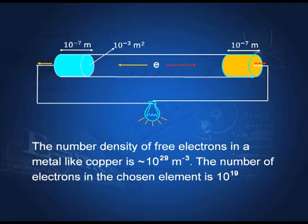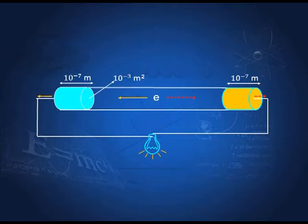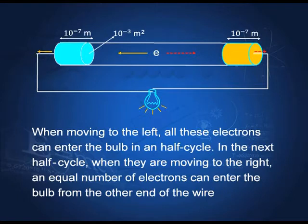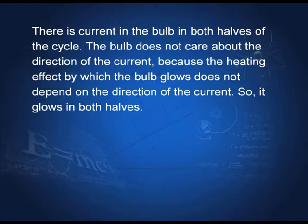In half a cycle, all the electrons just move from the wire to the outer circuit — to the bulb in this case. For the next half cycle, 10¹⁹ electrons move from the other end to the bulb. So for the first half, electrons move from one end, and for the next half cycle, electrons move in the opposite direction from the other end to the bulb. In both half cycles, the bulb is always getting current because electrons are flowing through it. The bulb does not care about the direction of the current because the heating effect by which the bulb glows does not depend on the direction of the current. So it glows in both halves.